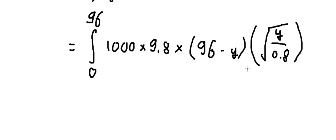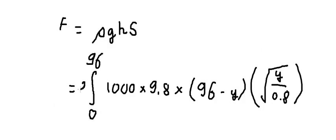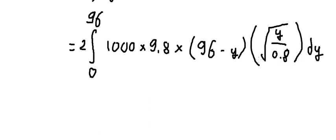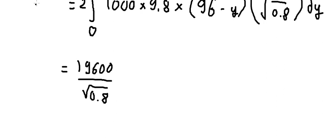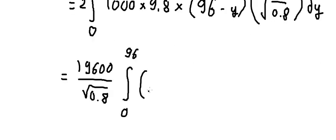Since we calculated only one side of the symmetric area, we multiply by 2. With that factor included, we have the full integration set up. Simplifying, we get 19,600 divided by the square root of 0.8, times the integral from 0 to 96 of (96 times square root of y) minus y times square root of y.